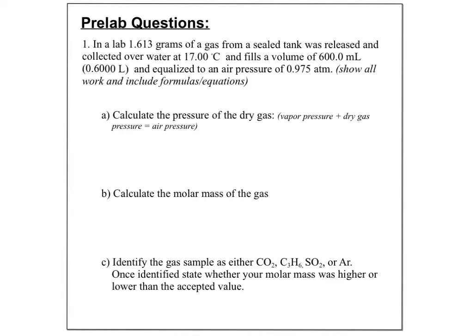Hopefully that video gave you an idea of what we're going to do. There are some small differences, but that teacher did an awesome job talking through the calculations. Let's say we have 1.613 grams of a gas in a sealed tank, and it's released and collected over water — bubbling it through 17°C water — and we collected a total volume of 600 milliliters, with a given air pressure.